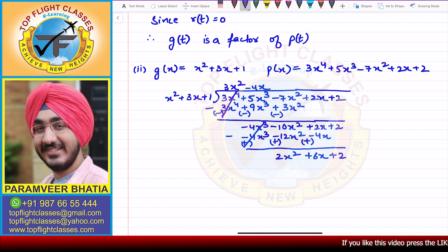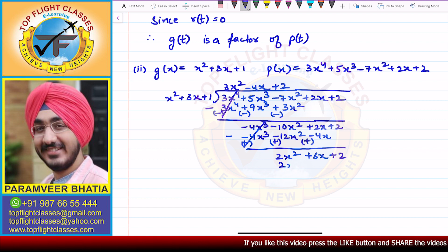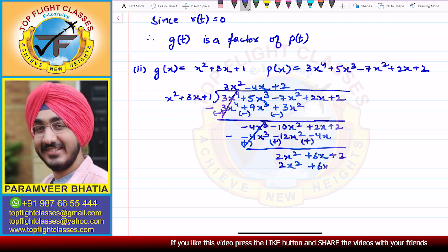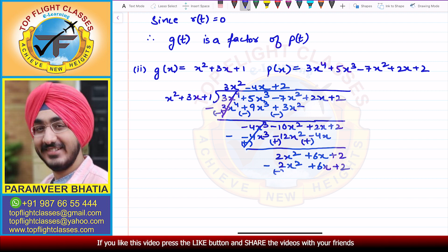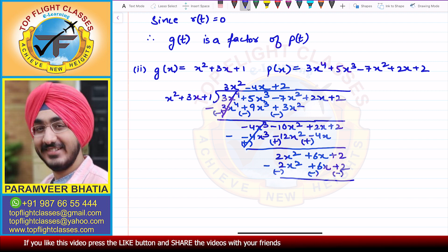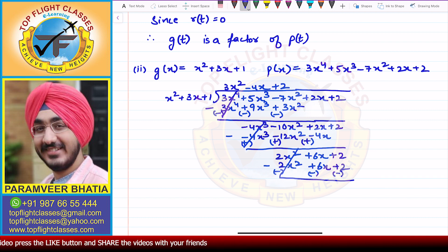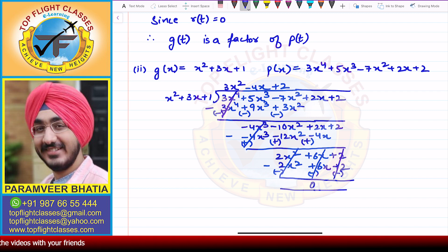To eliminate 2x², I multiply by +2: 2 × x² = 2x², 2 × 3x = +6x, and 2 × 1 = +2. When I subtract, the signs change: 2x² − 2x² cancels, 6x − 6x cancels, 2 − 2 cancels. So I get 0 as the remainder.